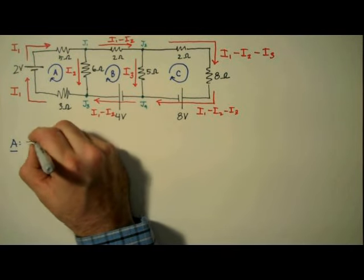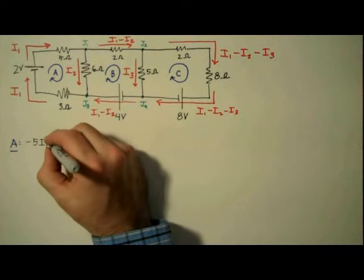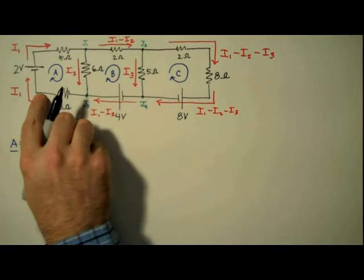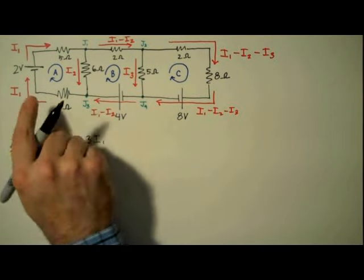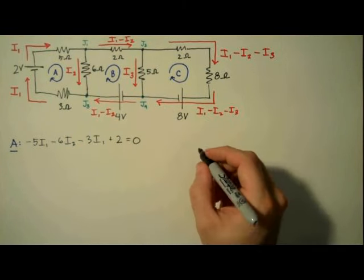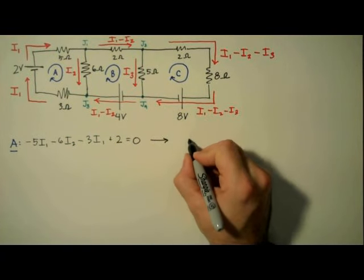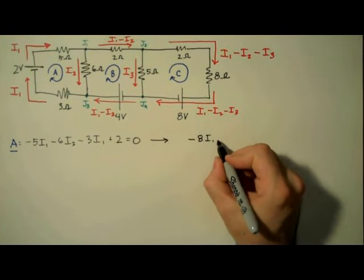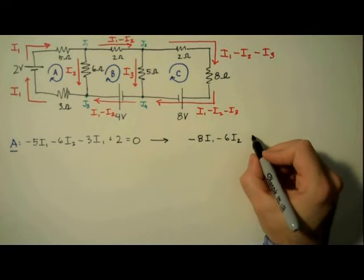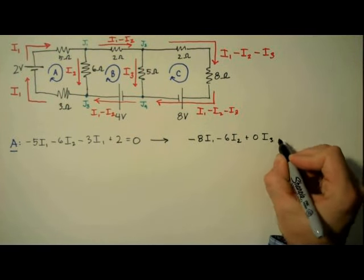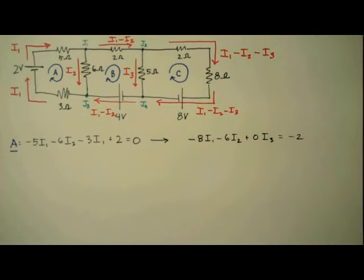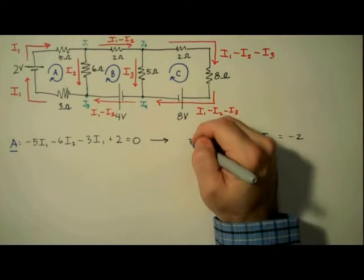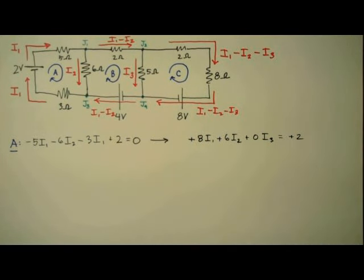Here we're going to start in the upper left-hand corner and move clockwise around our loop. So we have minus 5I1, minus 6I2, minus 3I1, plus 2, equals 0. This simplifies to negative 8I1, minus 6I2. And since we need an entry for I3, we're going to just write 0I3 here, equals negative 2. And we'll multiply through by negative 1 to get rid of those negative signs.